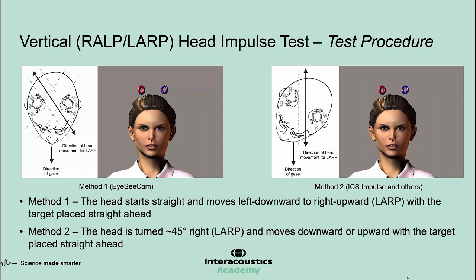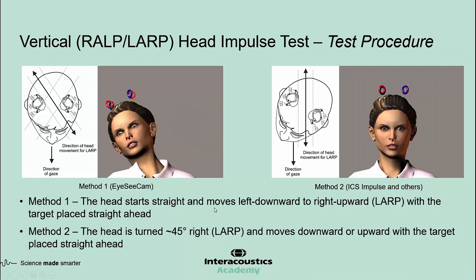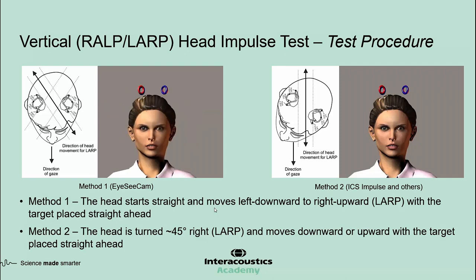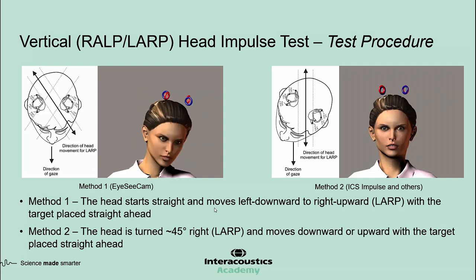For vertical head impulses, the test can be performed in the plane of right anterior-left posterior canals — that's RALP — or in the plane of left anterior-right posterior canals — that's LARP. Different manufacturers recommend different methods. In the first method, used by IC-CAM, the head starts straight and moves left downward to right upward with the target placed straight ahead. Only the left anterior and right posterior canals are in the plane of motion and are the only ones stimulated.